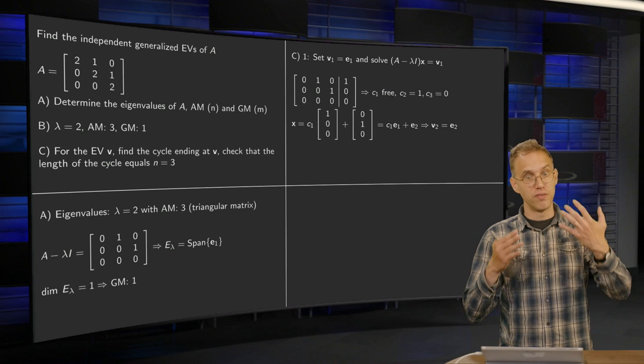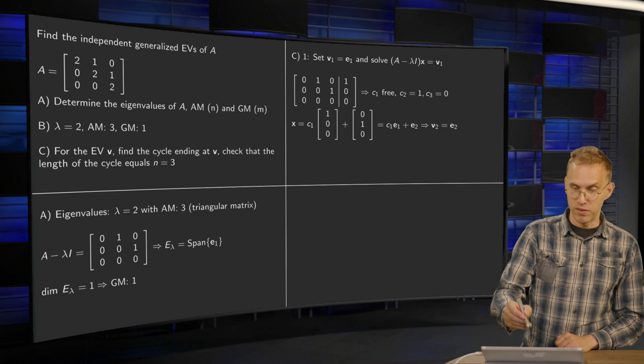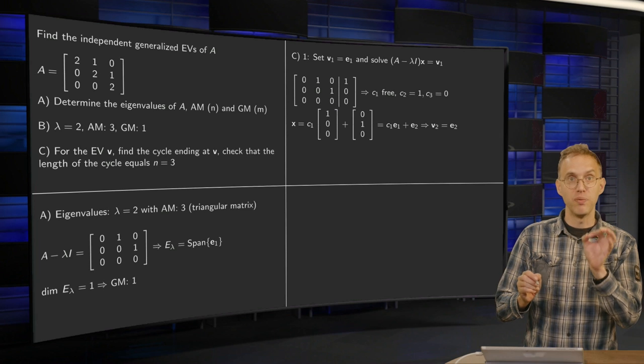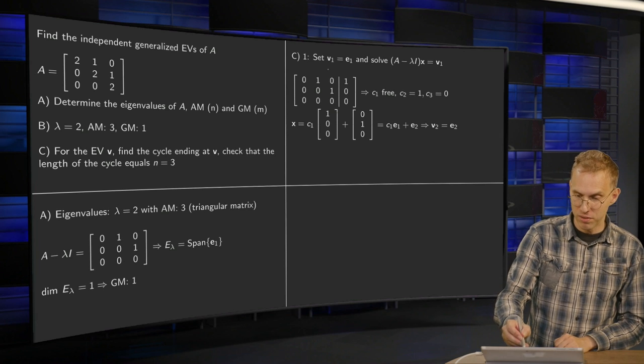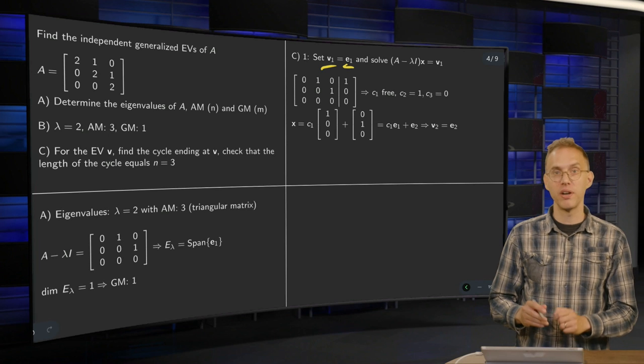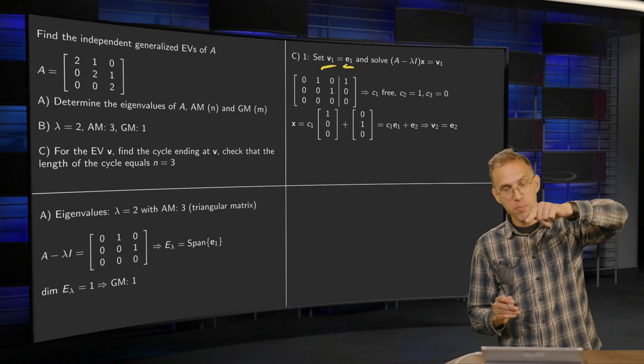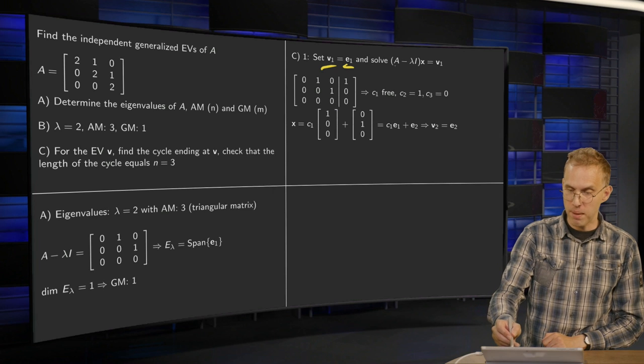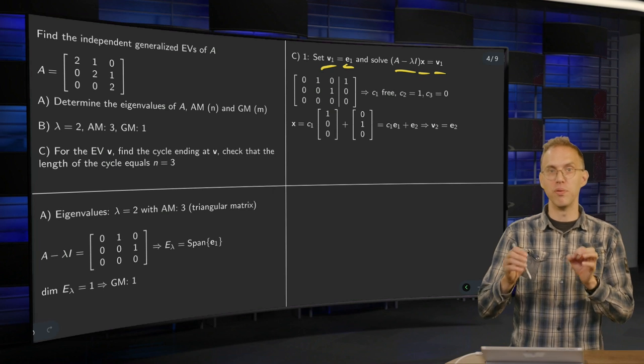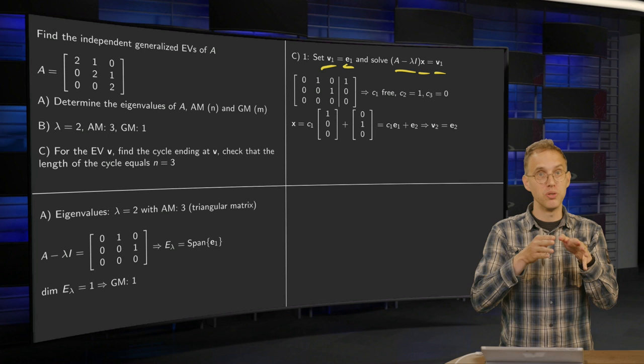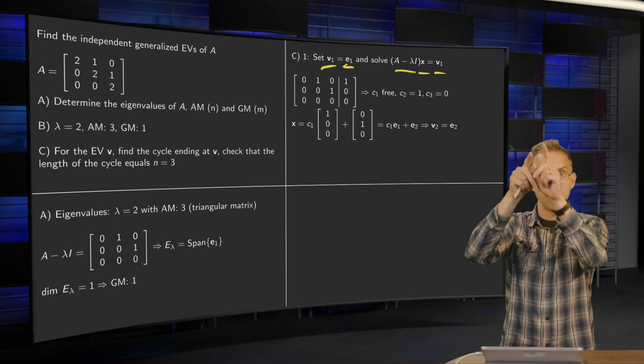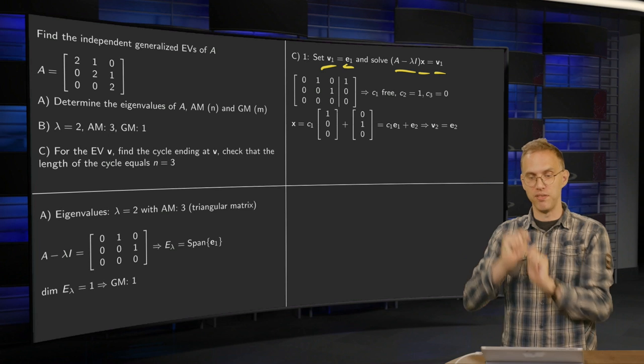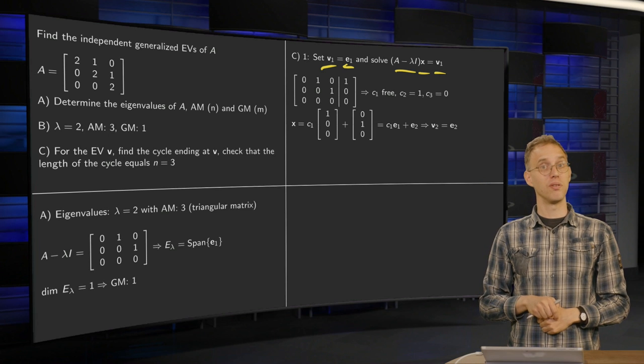So how are we going to find the other ones? Well, we set V1, which we called, by the way, the endpoint of the cycle. V1, we set it to E1. And then to step up, we have to solve A minus lambda I times x equals V1. That will give us the V2. So for stepping up, we have to solve A minus lambda I times a known vector equals the previous one. So that's what we are going to do.